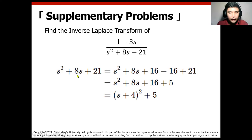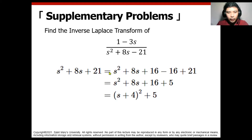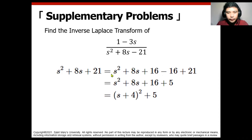Divide the middle term by 2, which is equivalent to 4, then square that to get 16. So s squared plus 8s plus 16 — we have added 16. We need to subtract 16 here so that when you perform arithmetic, we still arrive at the original. Basically, we did not change the equation; the answer is the same.